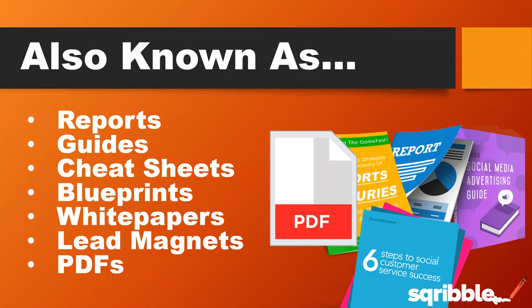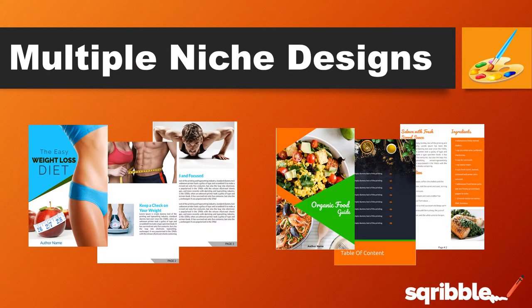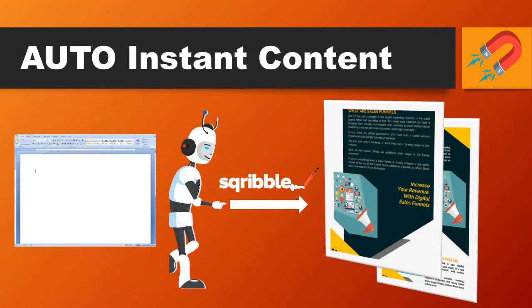There are amazing templates inside — lots of different types of themes, feels, and styles for any type of project. There are designs in there for all types of niches, so whatever your industry, there's going to be a template with lots of different designs for you. This is a massive feature of Scribble: it will allow you to populate your entire e-book with automatic instant content. They've got an incredible content engine — with just a few clicks it's going to fill out your entire e-book.